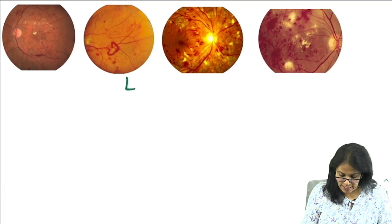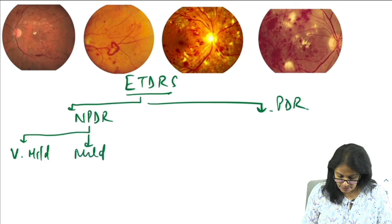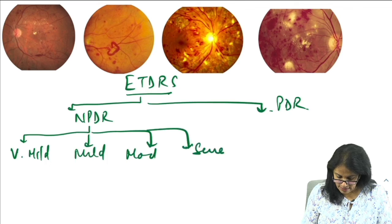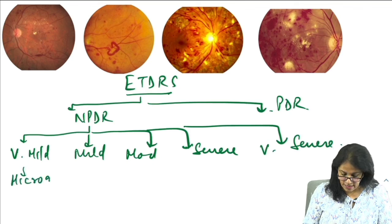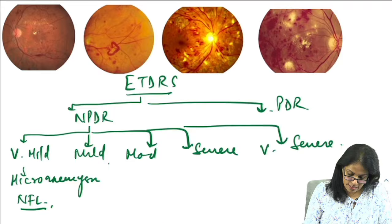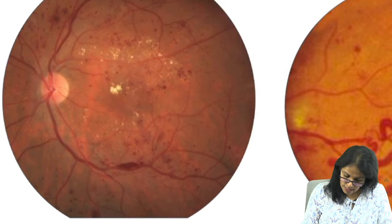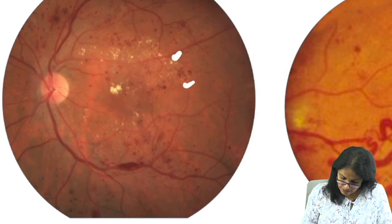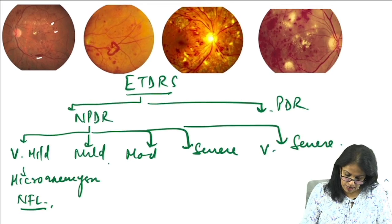Please revise your ETDRS classification. It classifies diabetic retinopathy as non-proliferative (NPDR) and proliferative (PDR). Non-proliferative stages: very mild is only microaneurysms — located in the nerve fiber layer. Mild includes microaneurysms with hard exudates, dot and blot hemorrhages, and flame-shaped hemorrhages.